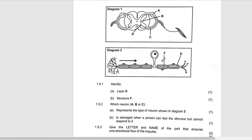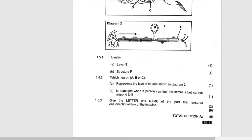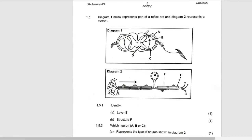Which neuron ABC represents the type of neuron shown in diagram 2? Because the cell body is along the neuron, it's going to become the sensory neuron, so it's going to be A.